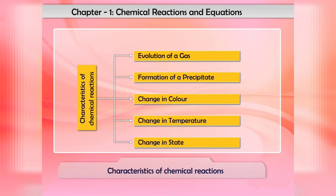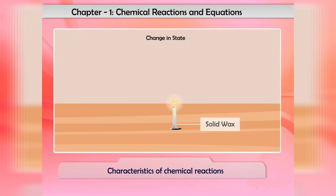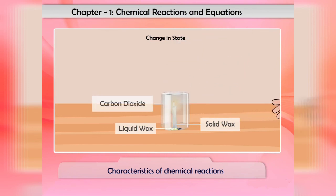Now we will discuss the fifth characteristic: change in state. When wax is burned, water and carbon dioxide are formed. Wax is a solid, water is a liquid, and carbon dioxide is a gas. This means that during the combustion reaction of wax, the physical state changes from solid to liquid and gas.